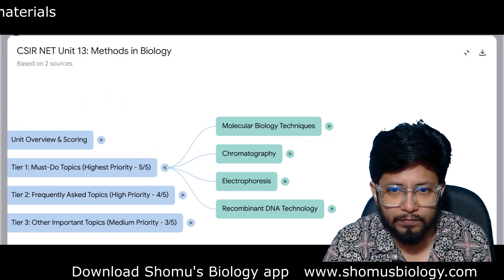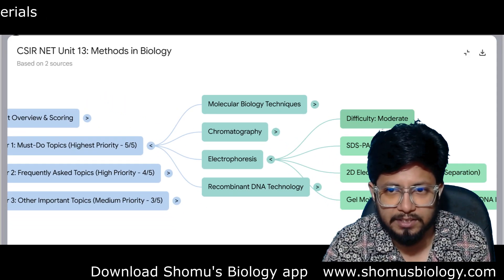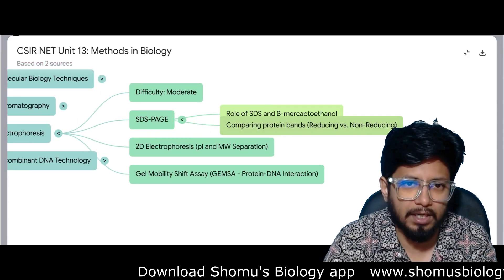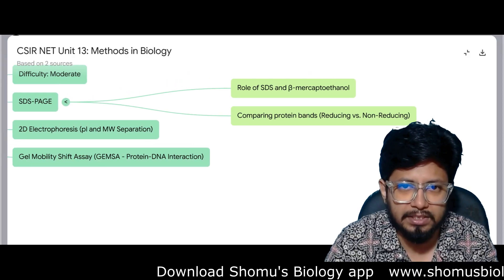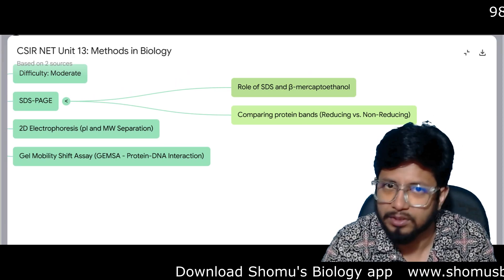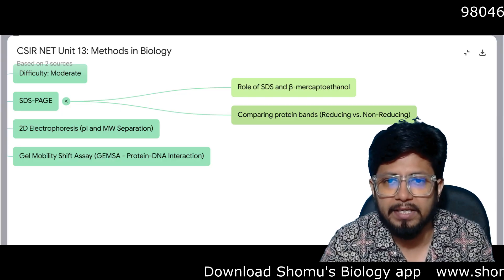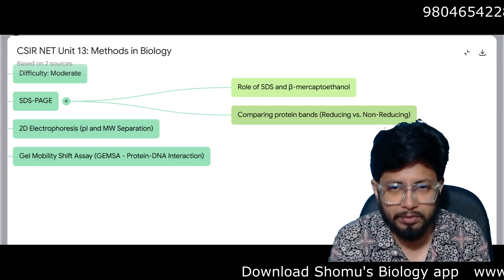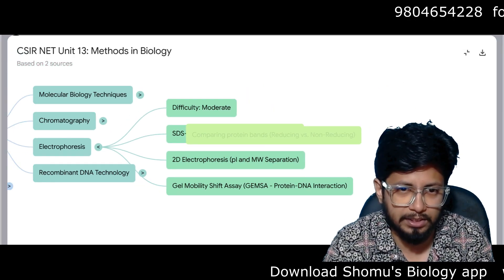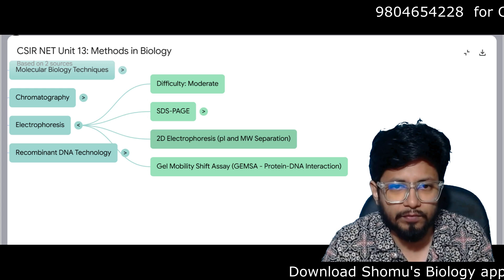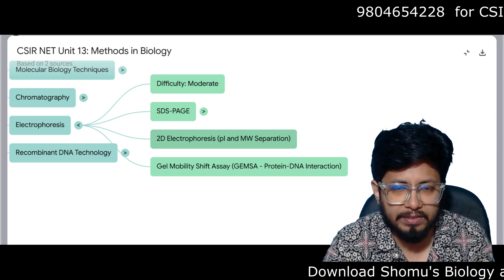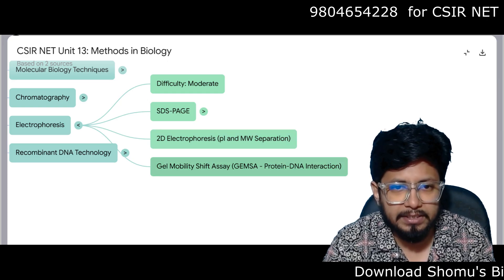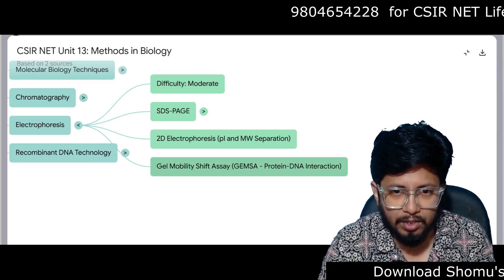Third important area is electrophoresis at moderate difficulty — SDS-PAGE for protein electrophoresis. Understand the role of SDS and beta-mercaptoethanol in SDS-PAGE, comparing protein bands, and distinguishing reducing versus non-reducing conditions. Also important is 2D gel electrophoresis, where proteins are separated based on pI and molecular weight. Gel mobility shift assay (GEMSA or GMSA) for protein-DNA interaction measurements is also required.